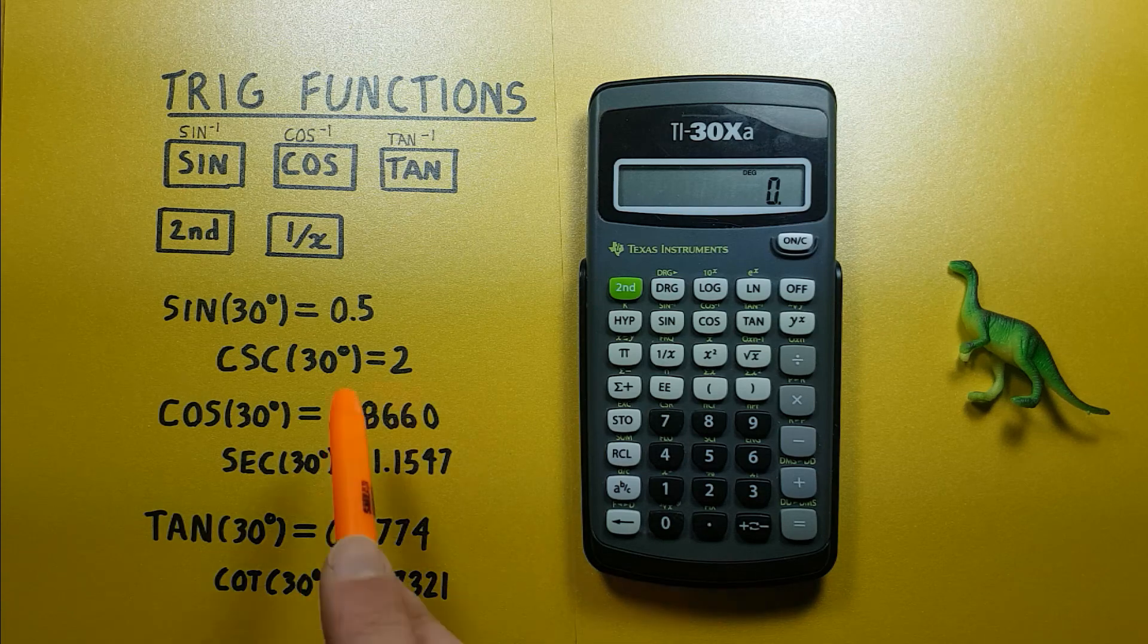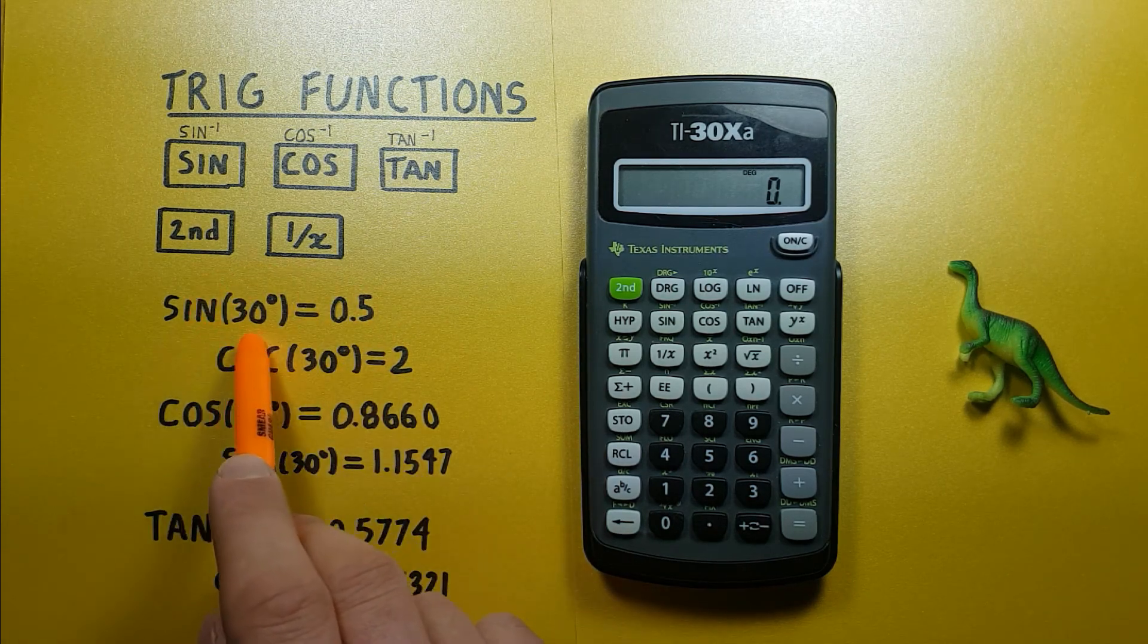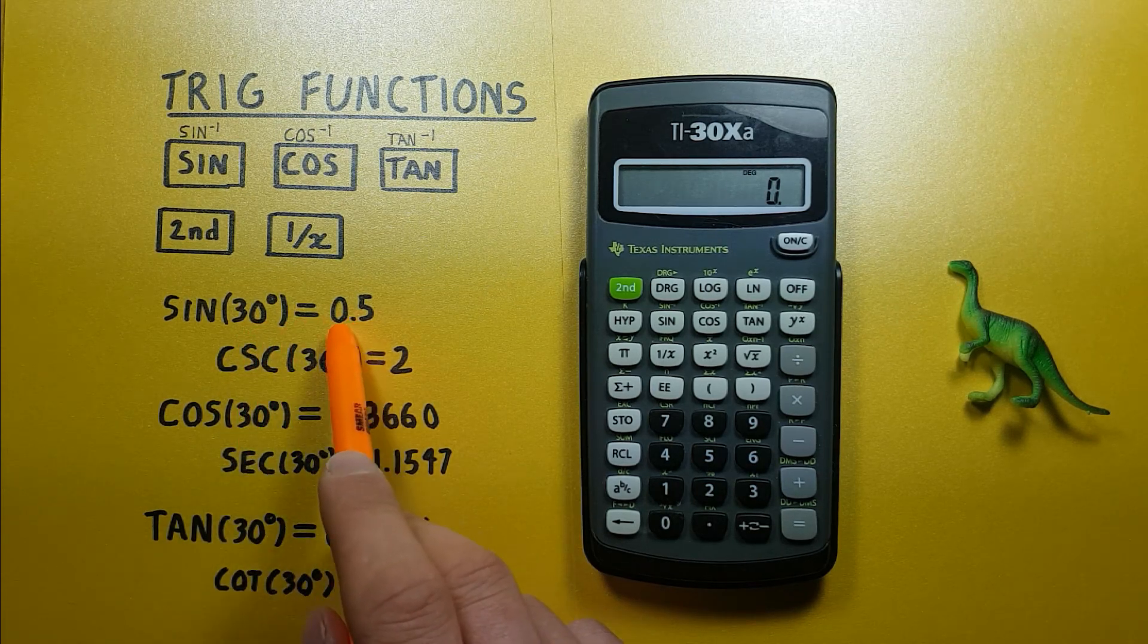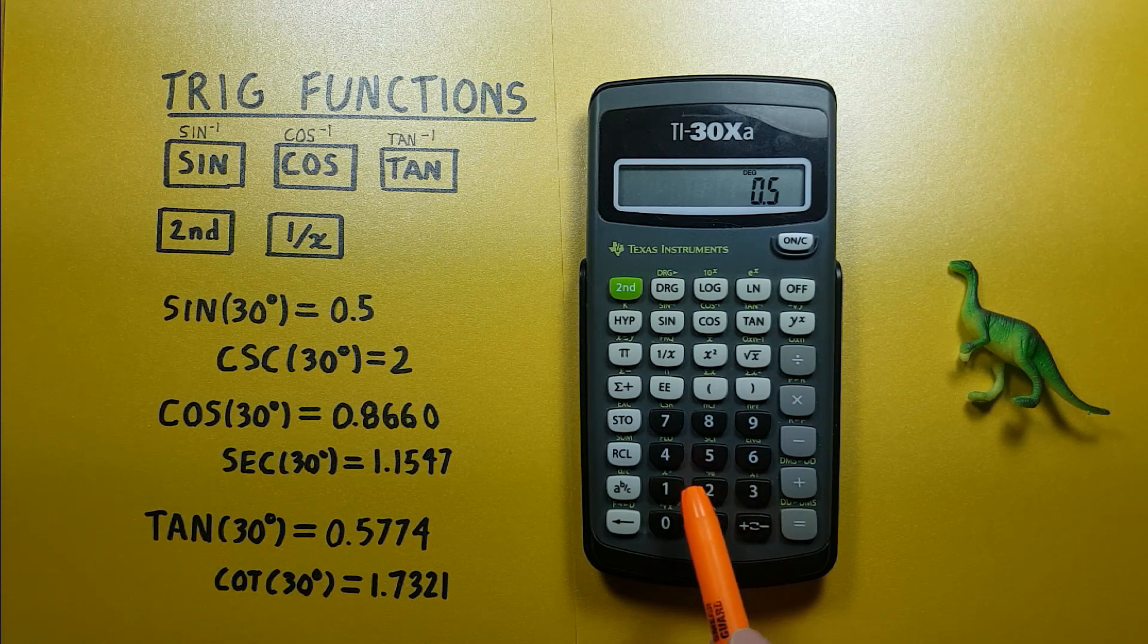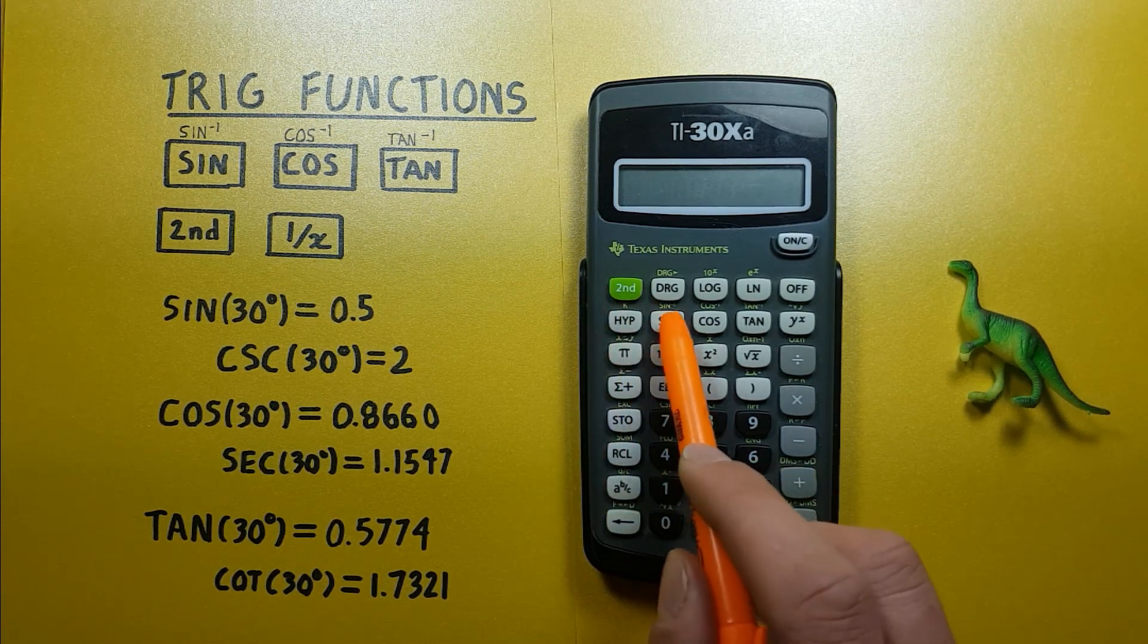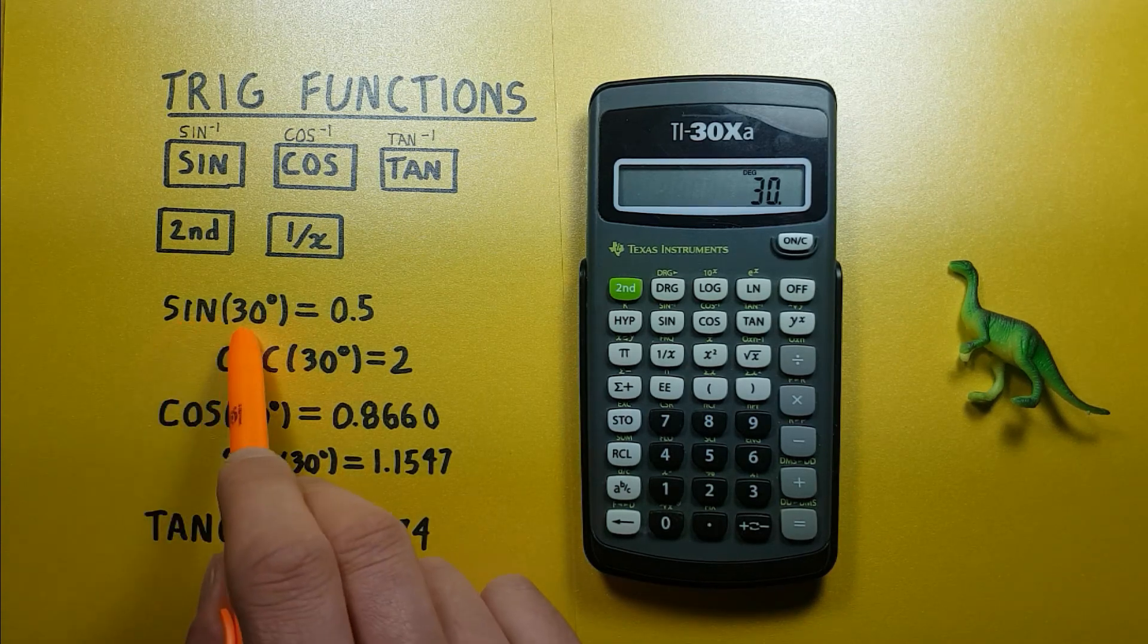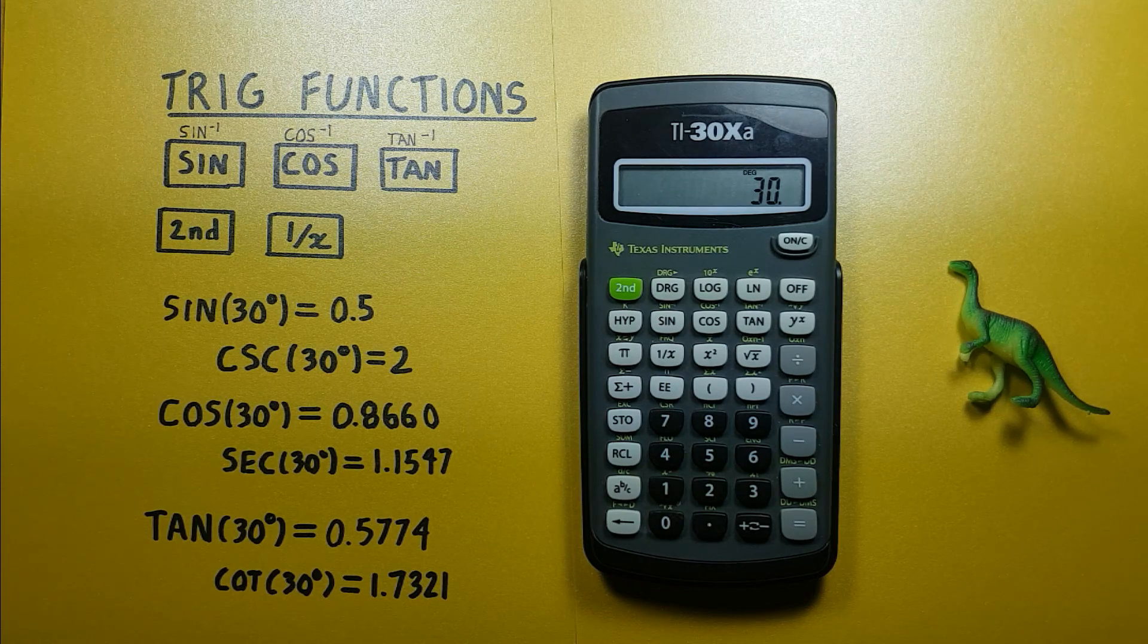And these take us from our result, let's say 0.5, back to however many degrees we used to get that. So if we want to do arcsin 0.5, we would place 0.5 on the screen and then press second function sine. Takes us to 30, so we know that sine of 30 degrees is equal to 0.5 and arcsin 0.5 is equal to 30.